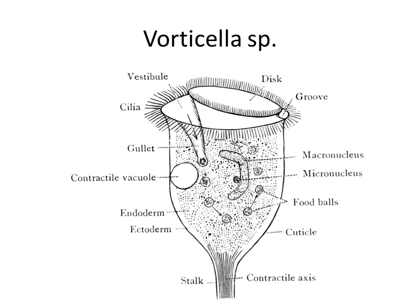The genus Vorticella is similar in appearance to Stentor, but a little more complex, especially in the mouth part and cell shape, which is bell-like. Again, with their stalk they are attached to a hard substrate in water. When disturbed, they have a contractile axis — similar to muscles — which helps the animal contract its stalk and avoid the irritant. The cell mouth is more complex than Stentor's, with a disc, groove, and vestibule, surrounded by many cilia.